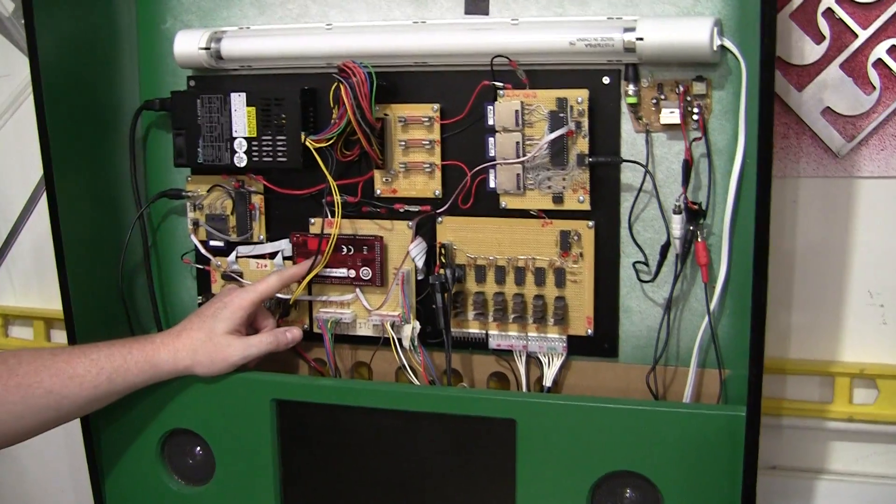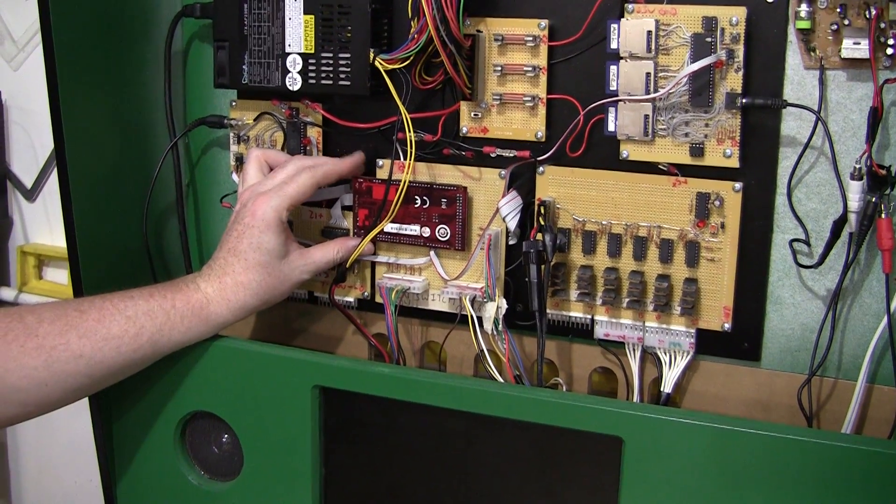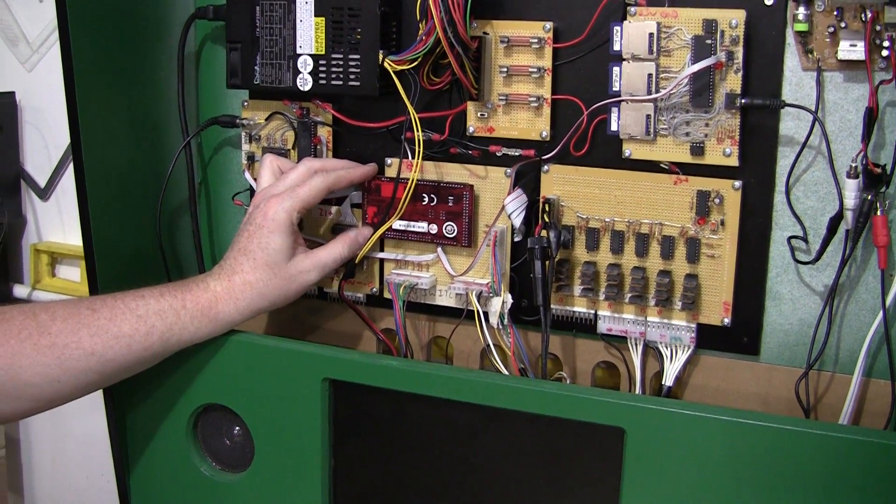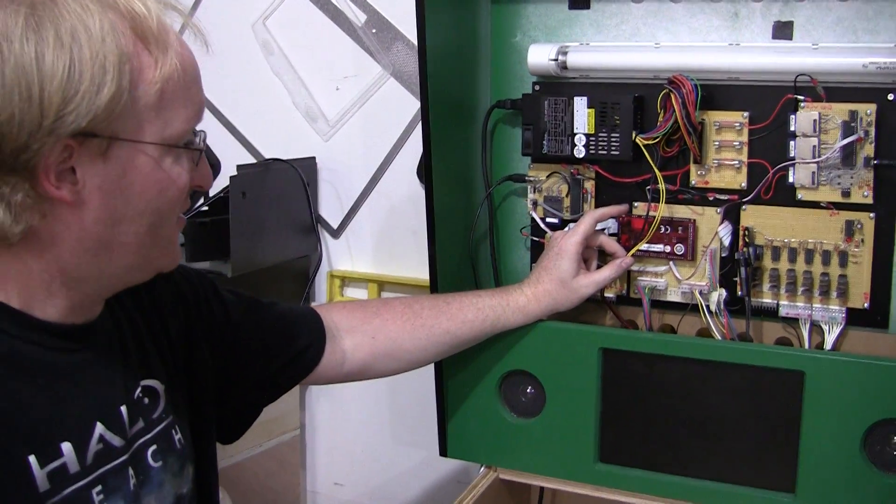It's got a Chipkit 32 processor here. This is like an Arduino compatible. It's like the Arduino Mac except it uses the PIC32. So it has a lot more RAM and it's 80 megahertz and 32-bit.